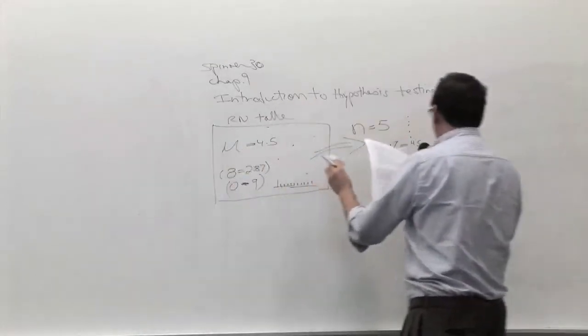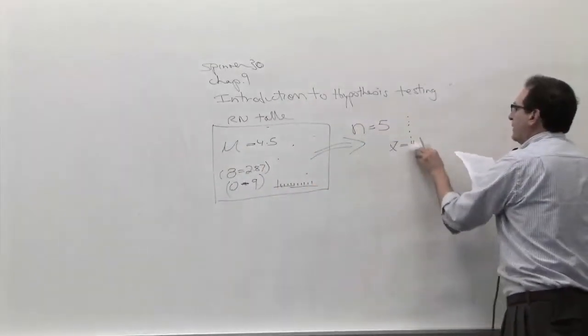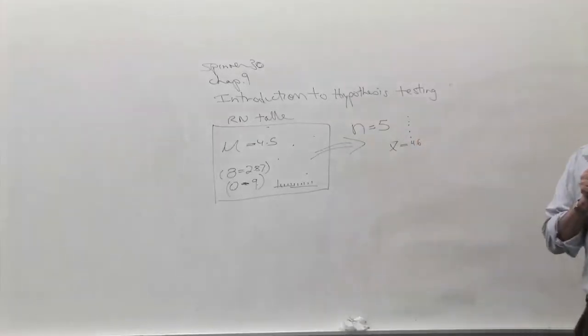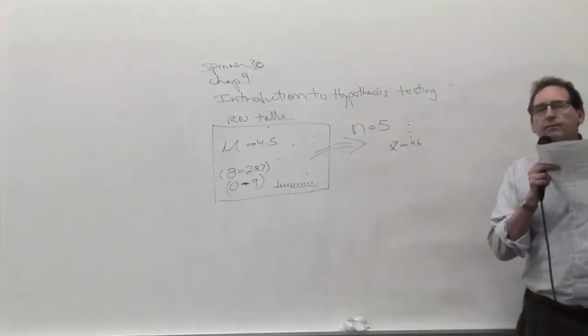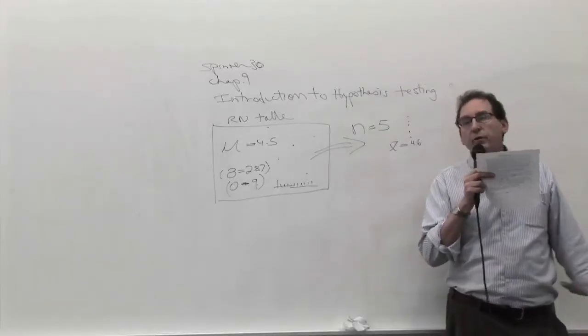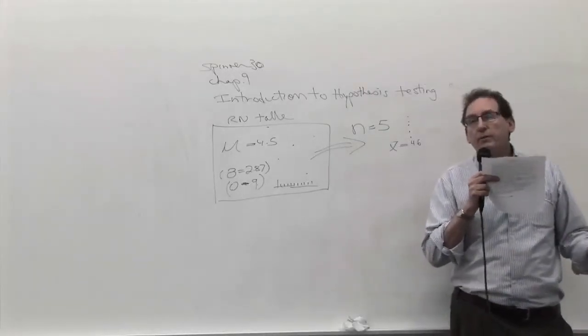But what if it came out to 4.6? What if the sample of five numbers came out to 4.6? Do we have, Brian, another couple of minutes with you? Okay. Let's say it came out to 4.6. What would you do then? Is 4.6 the same as 4.5? Well, from a mathematical point of view, the answer is no. But what about from a practical point of view?